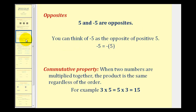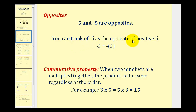First I want to talk about opposites. Five and negative five are called opposites. They're opposites because their sum is equal to zero, and they're also the same distance from zero. But you can also think of negative five as the opposite of positive five — they mean the same thing.